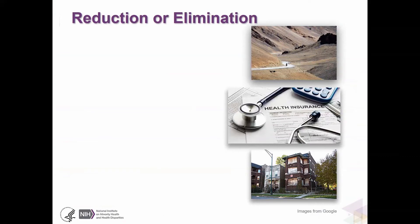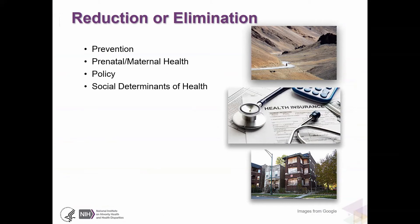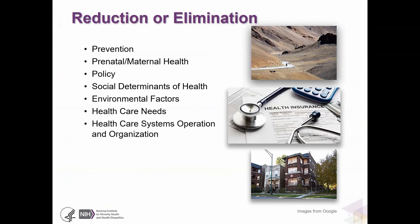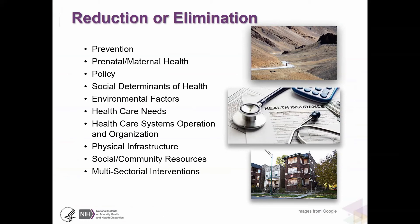If we are doing research to formulate or test strategies to reduce or eliminate health disparities, are we talking about prevention, prenatal maternal health, or early life events? Are we talking about changes in policy, interventions on social determinants of health, or environmental factors? What about healthcare needs — how do we assess them and intervene? Healthcare system management, operation and organization, the built environment, social and community resources, and interventions on sectors that are not strictly healthcare but have a huge influence.